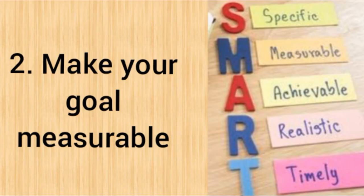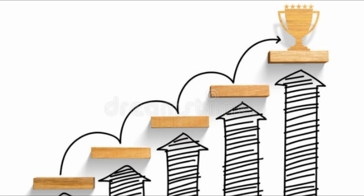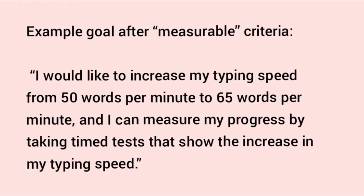After setting your specific goal, it is time to evaluate how you will measure it. This step in the SMART process prompts you to apply methods of measuring your progress, which may include tracking the time it takes to complete an action or meet a milestone. For example, with the measurable criteria: 'I will increase my typing speed from 50 words per minute to 65 words per minute, and I can measure my progress by taking timed tests that show the increase.'